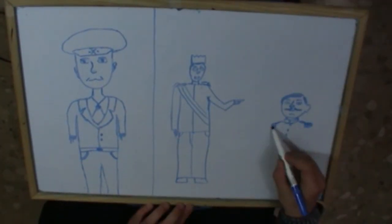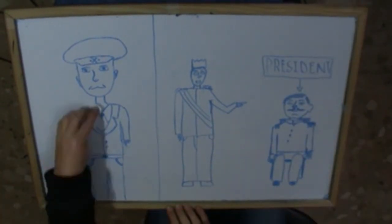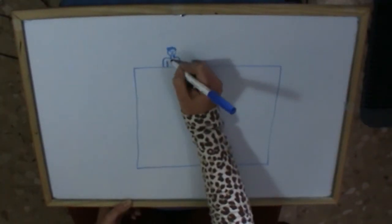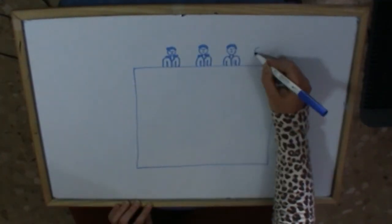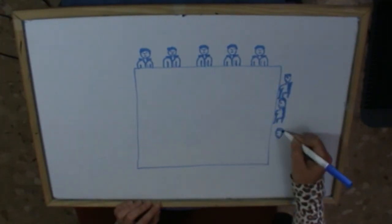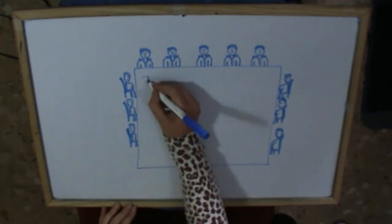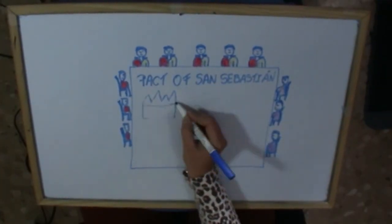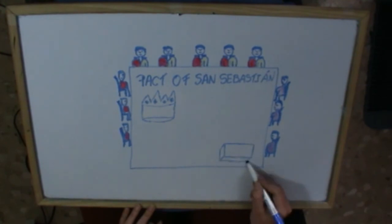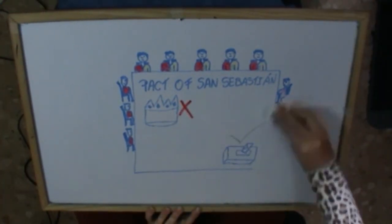In January 1930, the dictator resigned and the king appointed General Dámaso Berenguer as president of the government. This period was called the dictablanda, soft dictatorship, because the opposition didn't have much trouble to meet. In August 1930, the Republican parties, the Socialists and the Catalans signed the Pact of San Sebastián, an agreement to overthrow the monarchy of Alfonso XIII, create a provisional government and call elections to constituent Cortes.